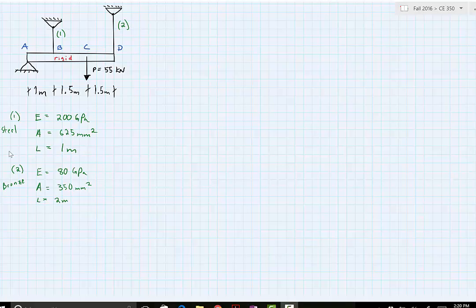This problem statement is a rigid beam between A and D with a pin connection at A, a cable 1 at B and a cable 2 at D, with a point load at C acting at C of 55 kilonewtons.